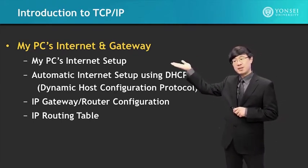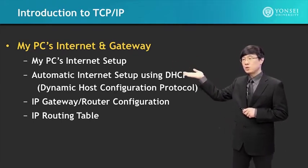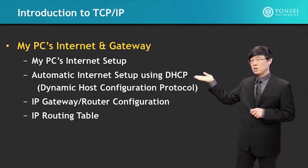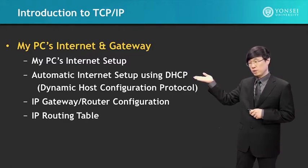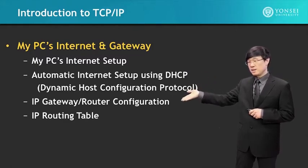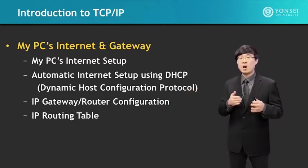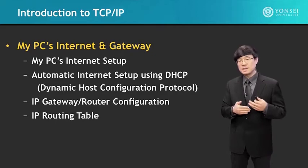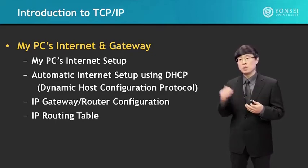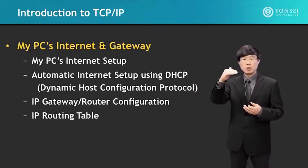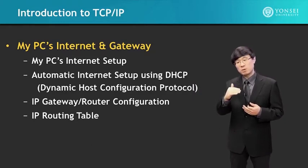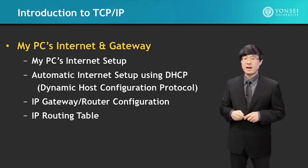We start off with MyPC's Internet Setup, then go into the Automatic Internet Setup using DHCP, which is the Dynamic Host Configuration Protocol. Then the IP Gateway and Router configuration, and based on that configuration, we're going to see how the IP routing table is set up, and how it's used when a packet comes into the router or the gateway to find which way to send it out.